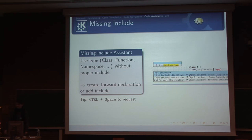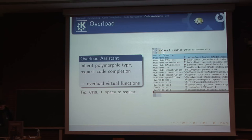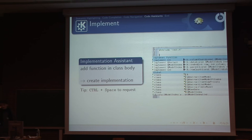There's also a missing include assistant — if you use QApplication without having it included anywhere, KDevelop offers to add the include for that file from your include path, or to use a forward declaration instead. And there's an overload assistant: write your class, inherit from a virtual class, do Ctrl+Space in the body, and it tells you which pure virtual functions you must override (marked with a red flag) and which other virtual functions you can optionally override. Switch to the CPP file, do the same Ctrl+Space, and it will write the function body for you so you can just write the real code.